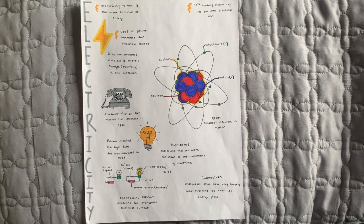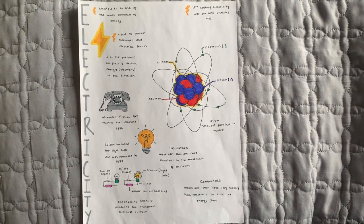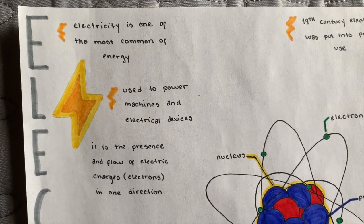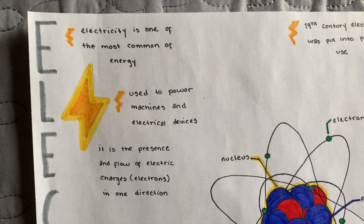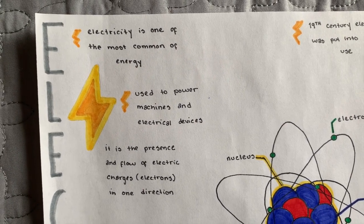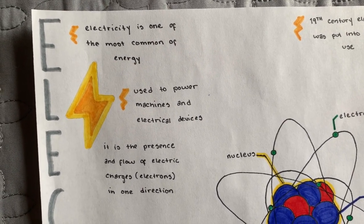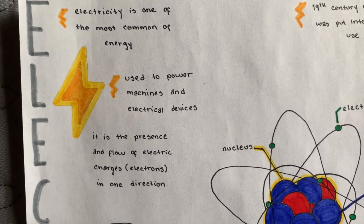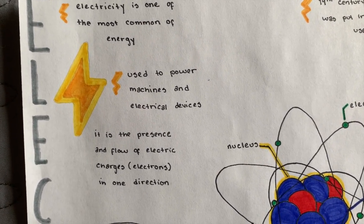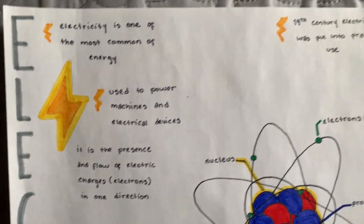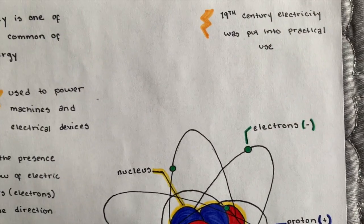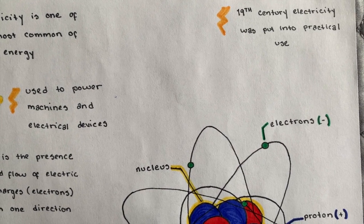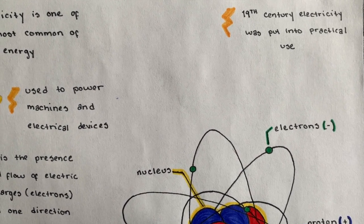So this is the mind map for electricity. Electricity is the most common form of energy, used to power machines and electrical devices. It is the presence and flow of electric charges or electrons in one direction. It wasn't until the 19th century that electricity was put into commercial use.